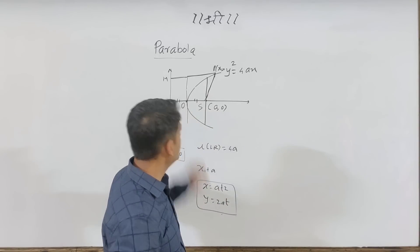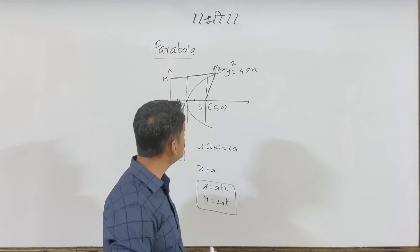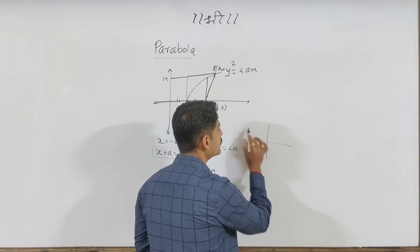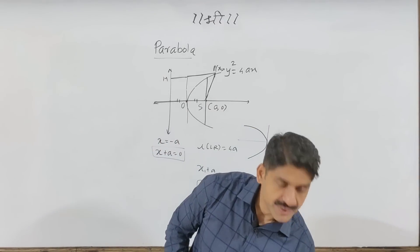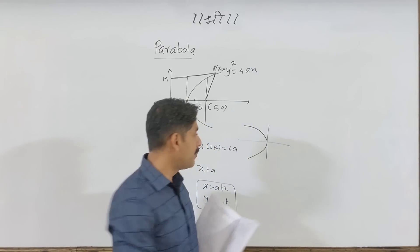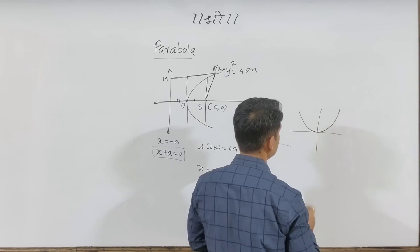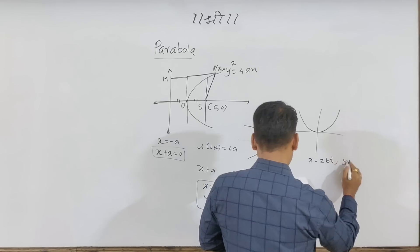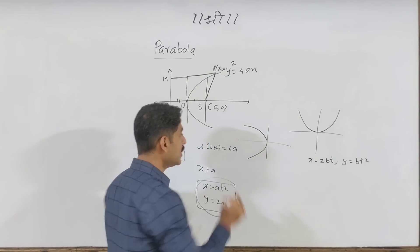The parabola opens with x positive. You can understand that when both x and y values are positive, this is the upward opening parabola. For the upward opening case, we have x equals minus at squared and y equals to 2at. The two values being positive confirms the upward opening orientation.